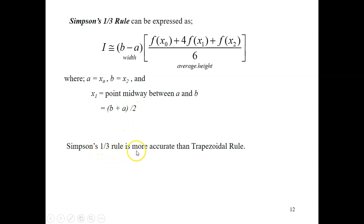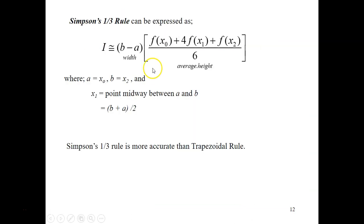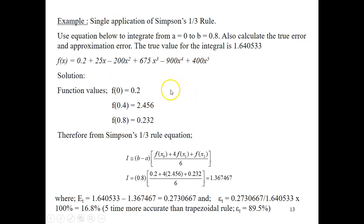Simpson's 1/3 rule is more accurate than the trapezoidal rule. For Simpson's rules, we have two types: Simpson's 1/3 and Simpson's 3/8. We'll look at Simpson's 1/3 first. Let's apply it to the same example as before — the same function used to calculate the integral with the trapezoidal rule — with the same limits from zero to 0.8.